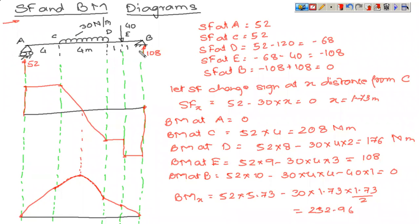The reactions that were calculated are 108 and 52 at the two supports. The horizontal value is zero and is of no importance for drawing shear force and bending moment diagrams, so it has not been represented. Moving from left to right, at the first point A there is only one load of 52 acting in the upward direction. So SF at A is 52. Upward direction is positive and downward direction is negative as per sign conventions.